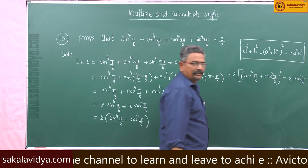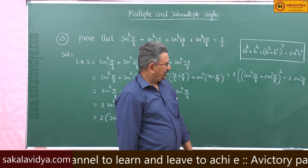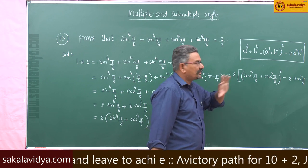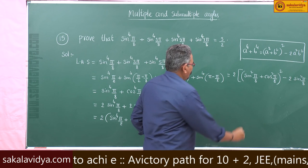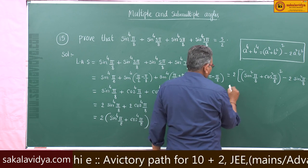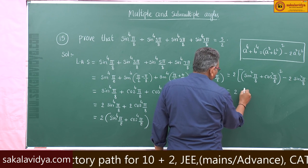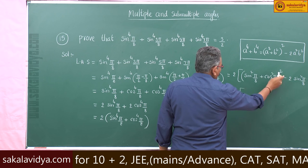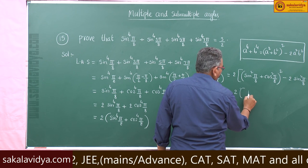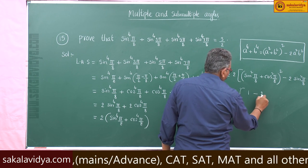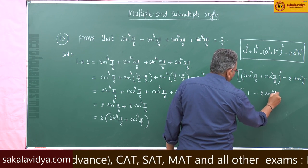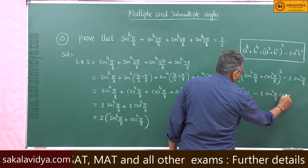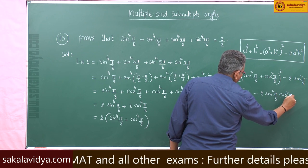Here, sin²θ + cos²θ = 1. So we can write: 2·[1² − 2·sin²(π/8)·cos²(π/8)], which simplifies to 2·[1 − 2·sin²(π/8)·cos²(π/8)].